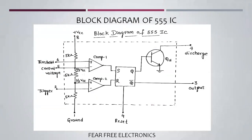In the block diagram of the 555 IC, there is a potential divider. There are 3 five-kilo-ohm resistors connected in series as a potential divider. The major components present in the internal circuit of the 555 IC are: 3 five-kilo-ohm resistors, two comparators (comparator 1 and comparator 2), one SR flip-flop, and a discharge transistor (QD).